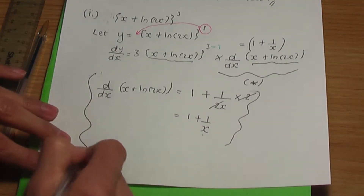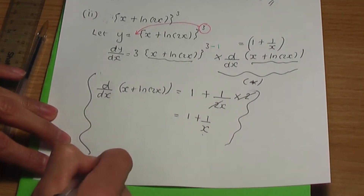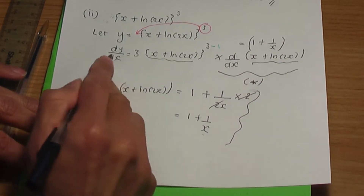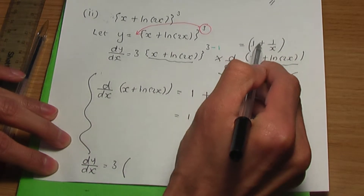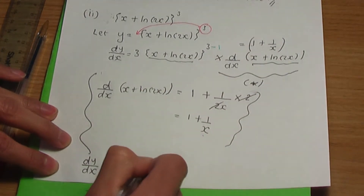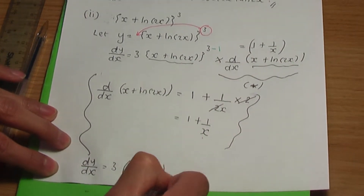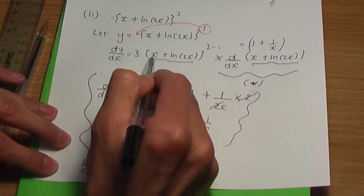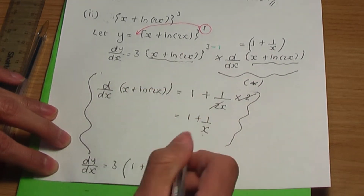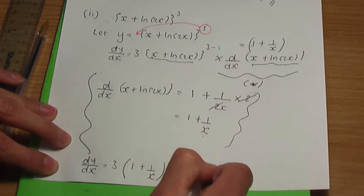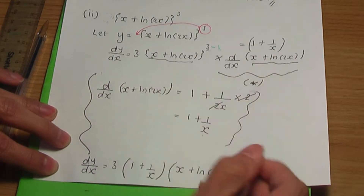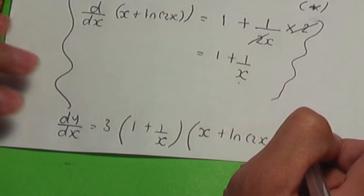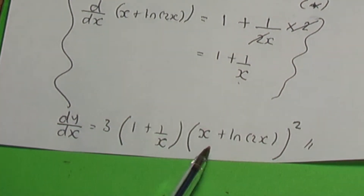So, to the main calculation: dy/dx is equal to 3 multiplied by 1 plus 1 over x, multiplied by x plus ln 2x raised to the power 3 minus 1 being 2. That should be the solution to part 2 of A.